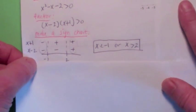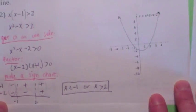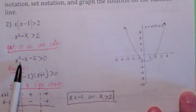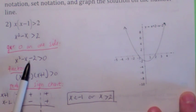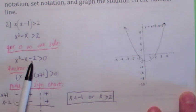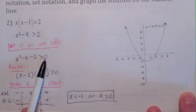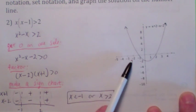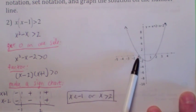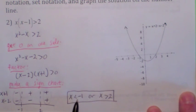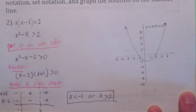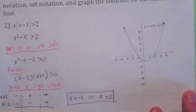If you look at the graph of y equals x squared minus x minus 2, when is the graph greater than zero? That's precisely when the graph is above the x-axis. The graph is above the x-axis when x is less than negative 1 and when x is greater than 2 — so that shows you why this method works.